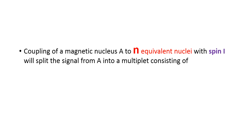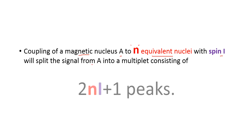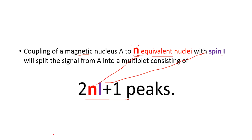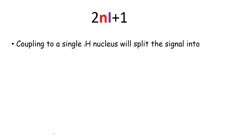The coupling of magnetic nucleus A to N number of equivalent nuclei with spin I will split the signal from A into a multiplet. The number of signals is equal to 2NI + 1 peaks, where N is the number of equivalent nuclei and I is the spin.